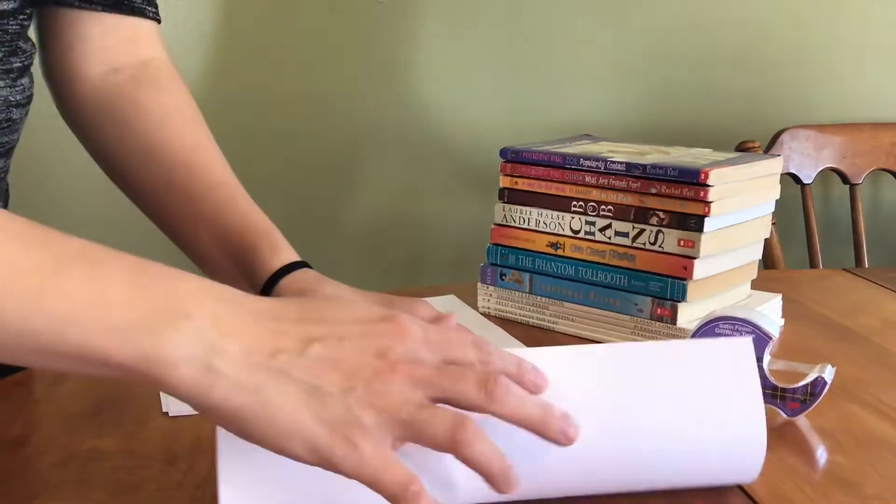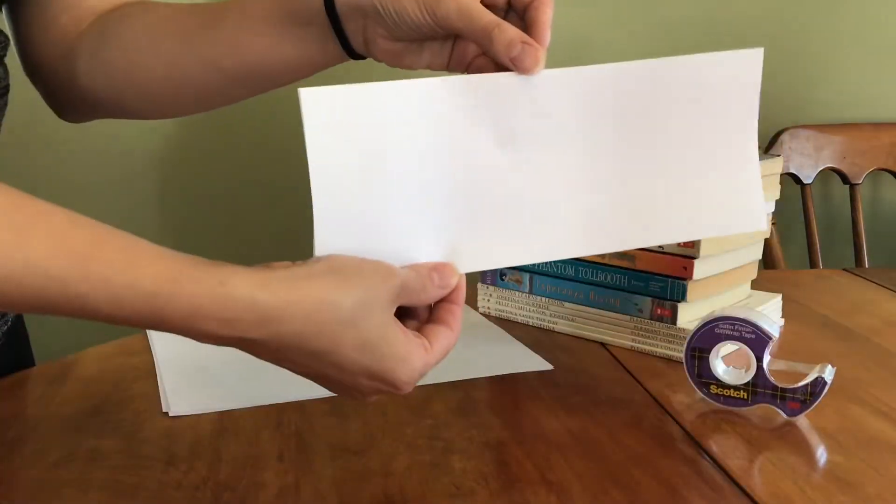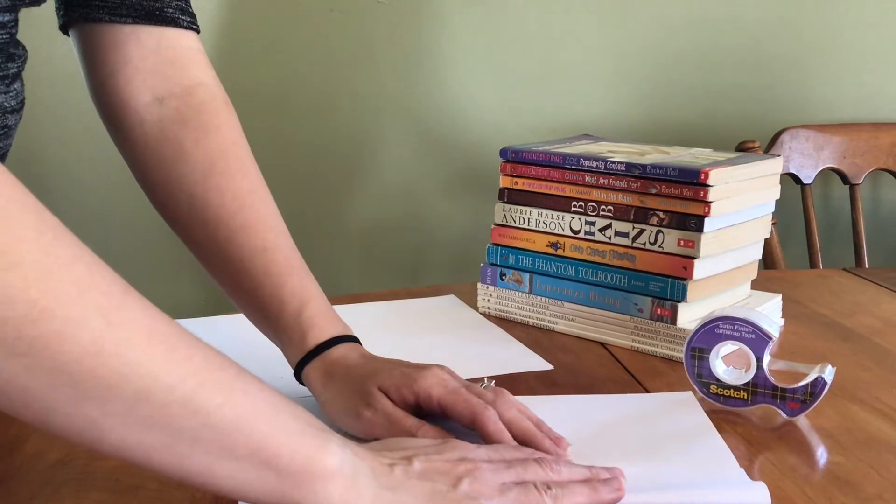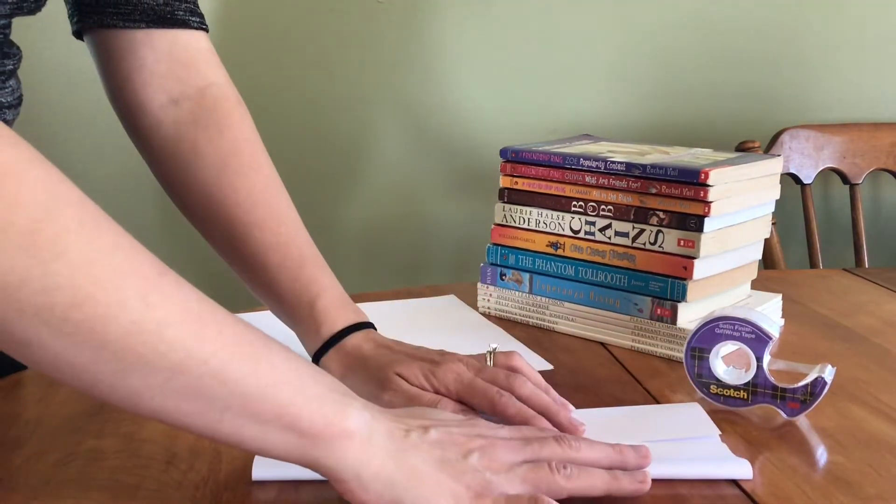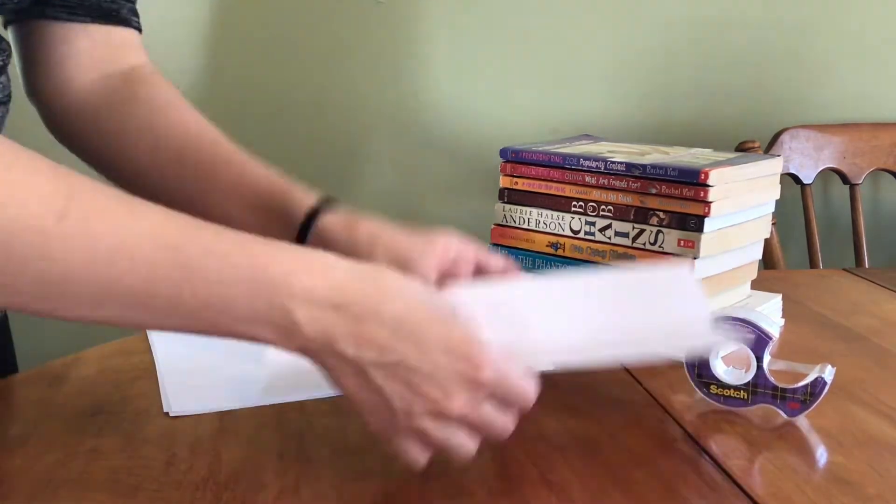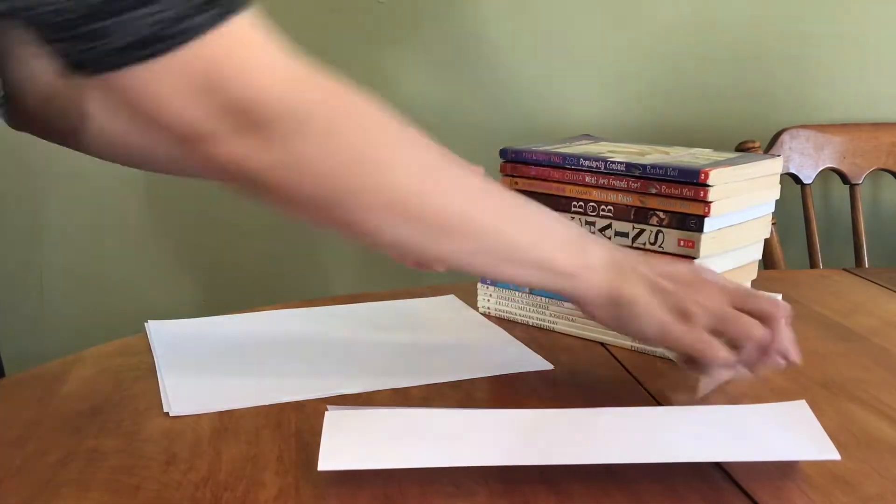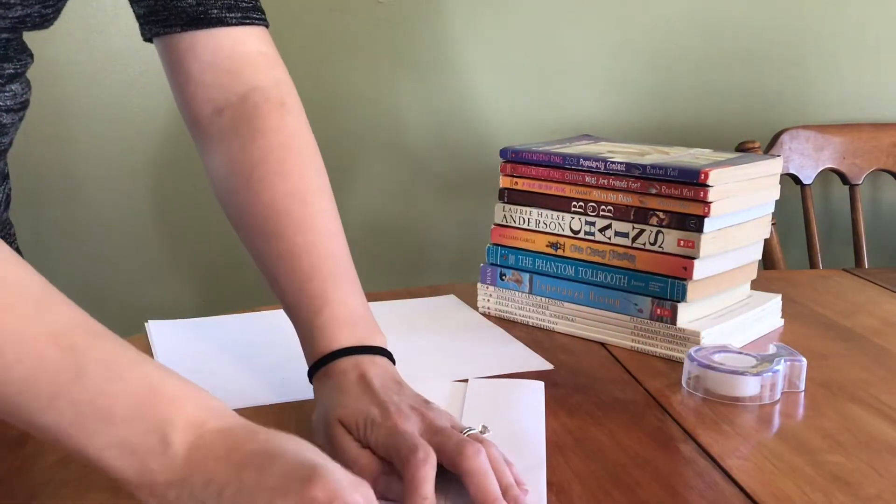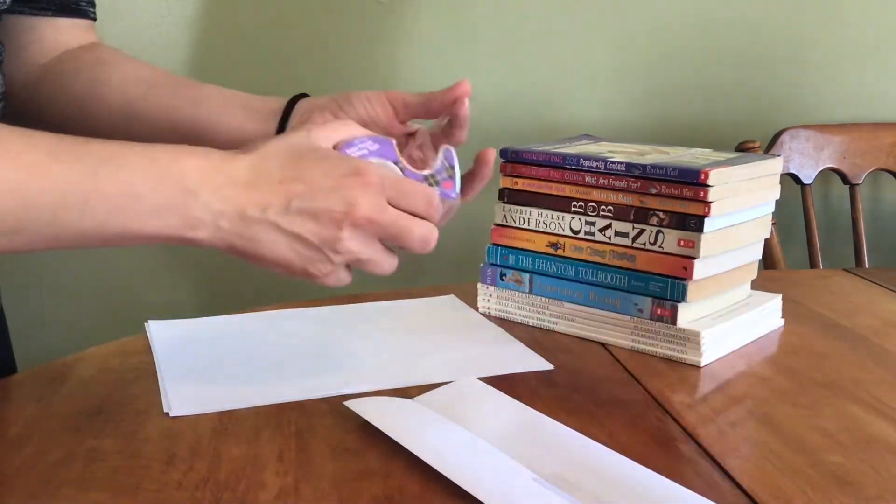The first column we're going to make will be square shaped. Fold your paper in half long ways and then fold each half in half again. Now you're going to tape along the opening on your folded sheet of paper in order to give it that 3D column shape.